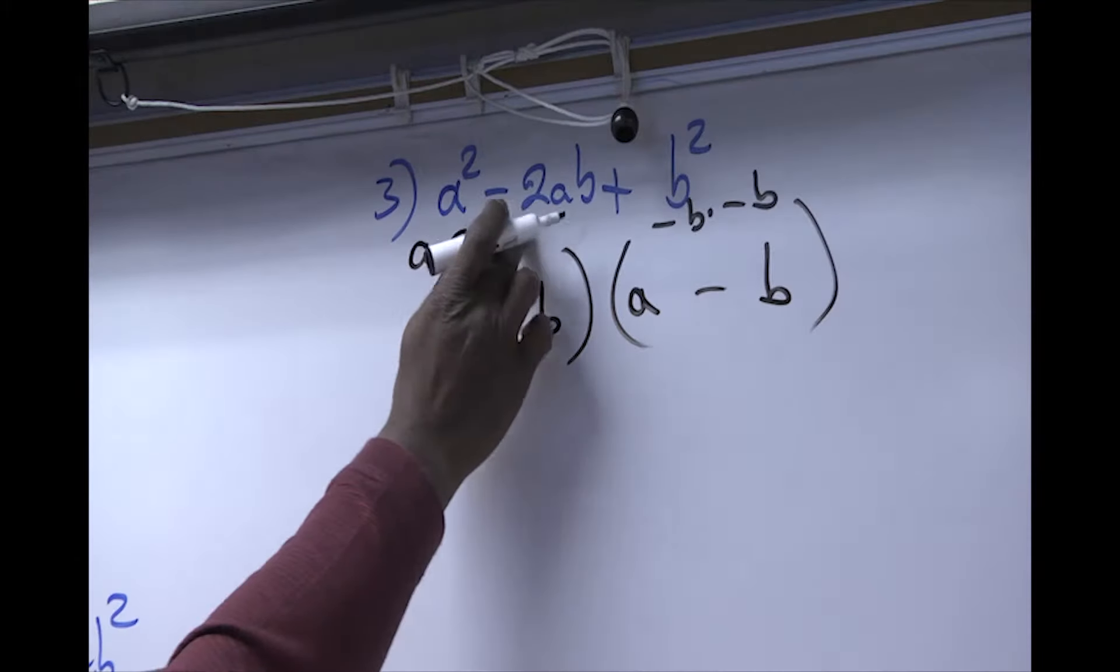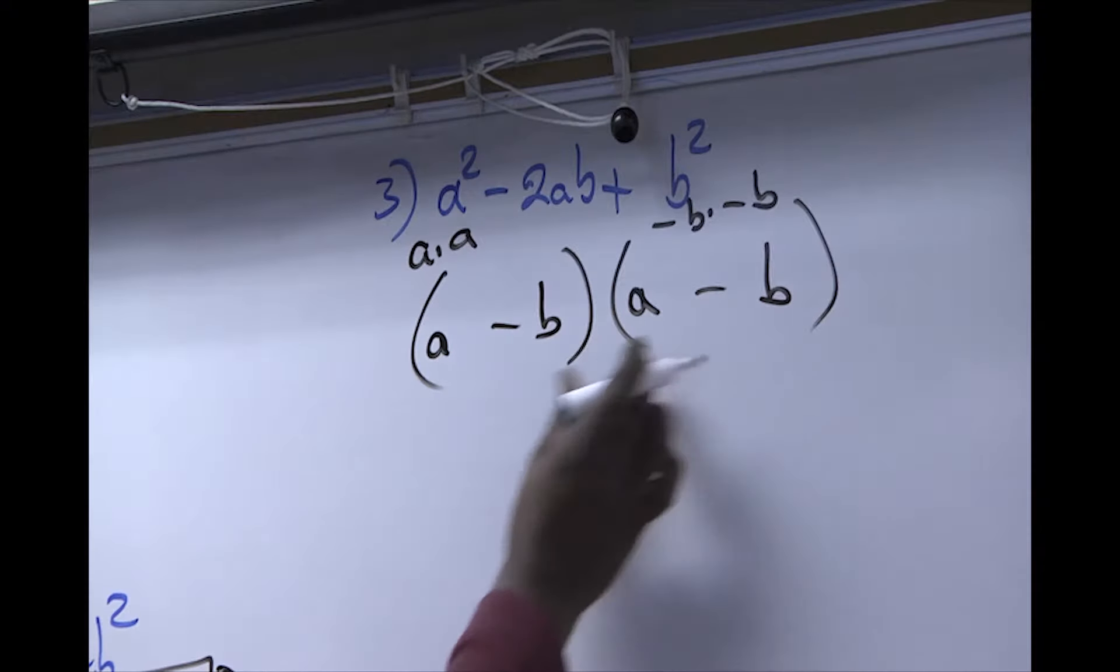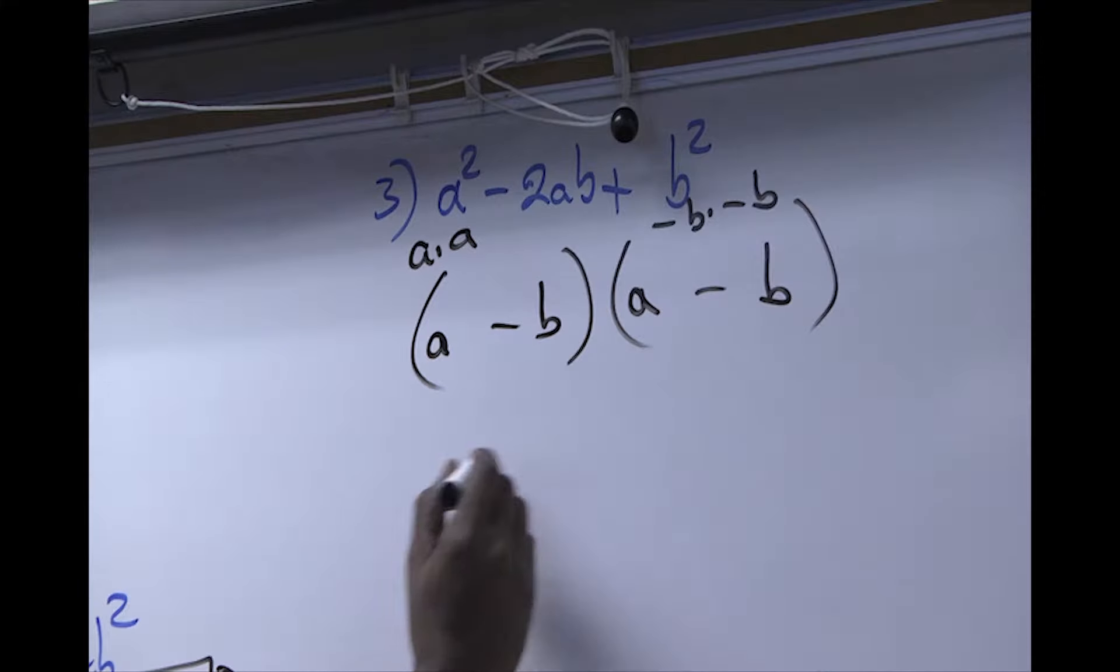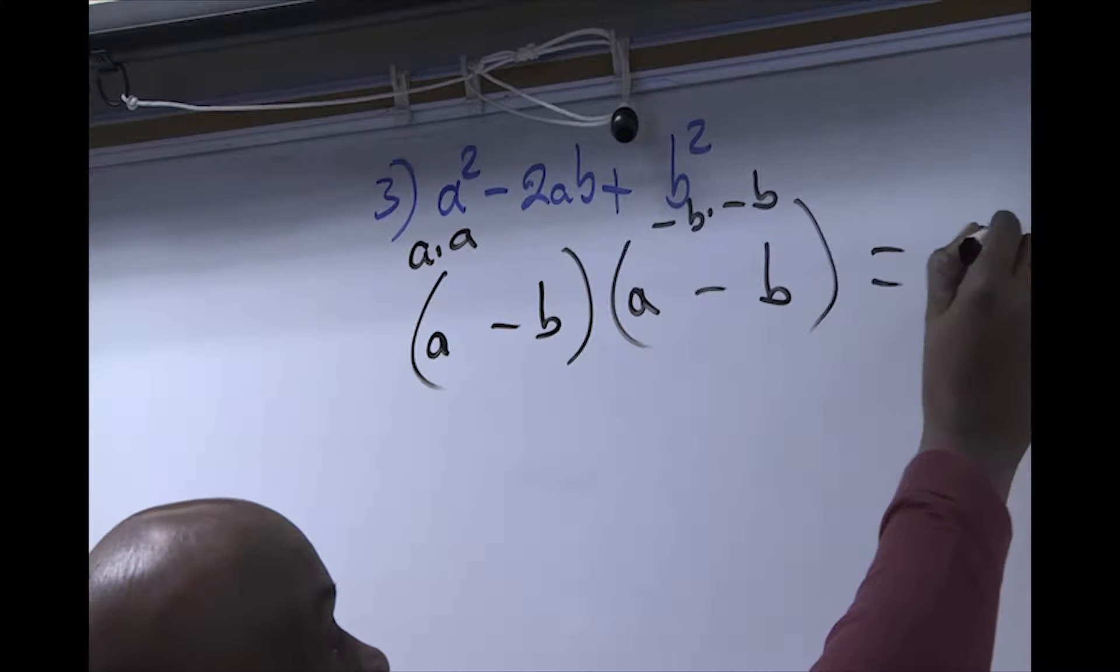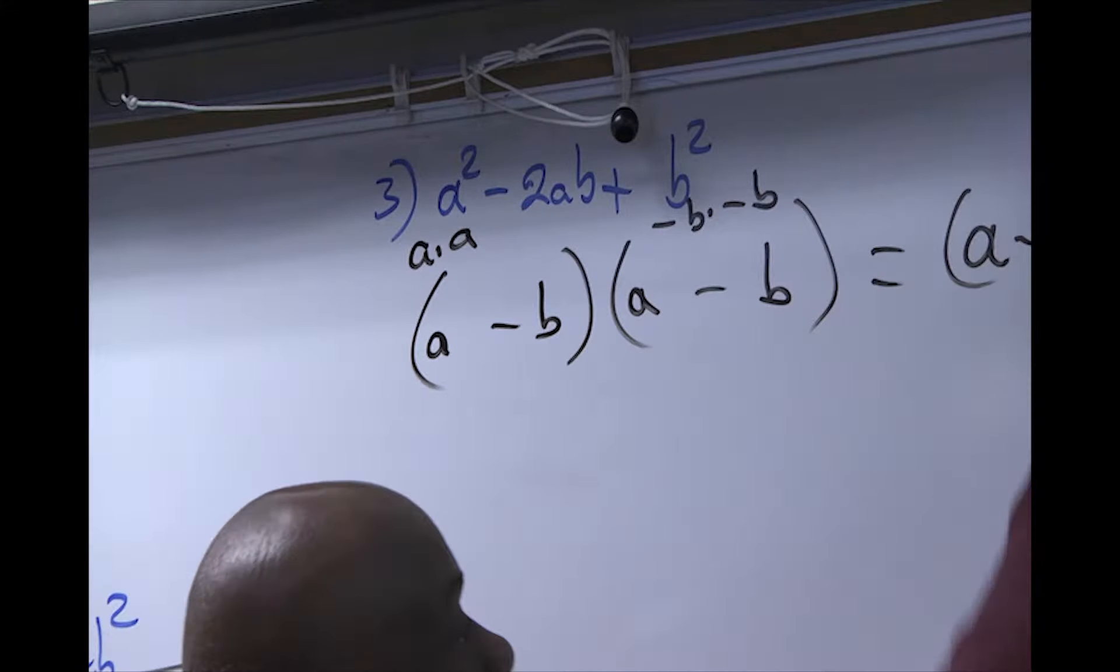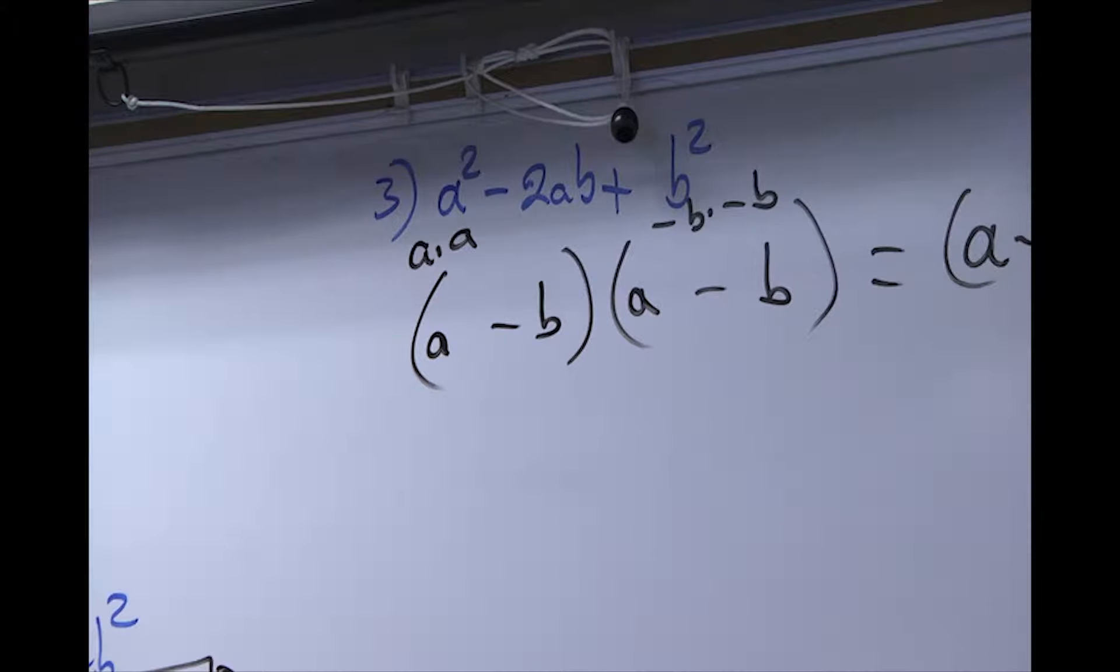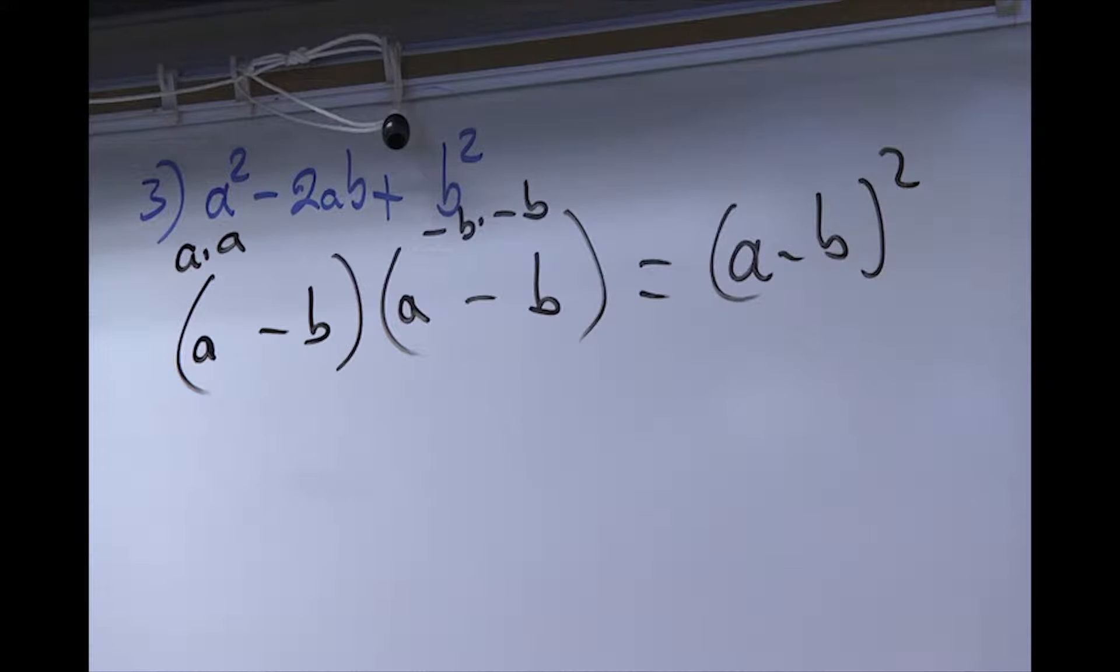And if you multiply, you should get the original. Now you note that both of these are the same. So we can also express this as (a - b)² raised to the second power.